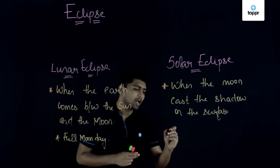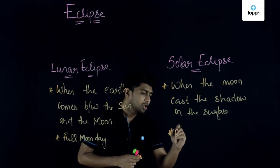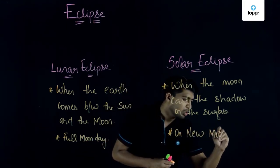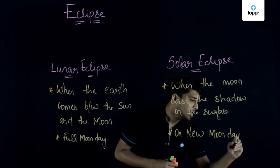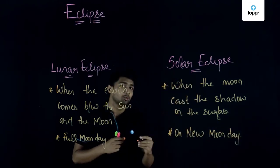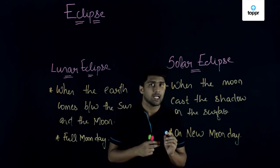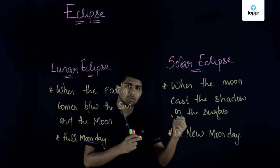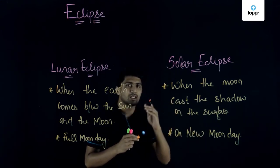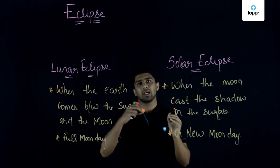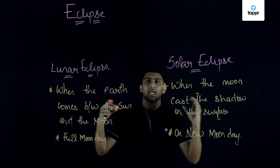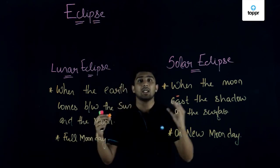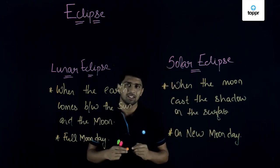Solar eclipse basically happens on a new moon day. This is why we are not able to see the moon on a new moon day — because as per solar eclipse, the sun, the moon, and the earth come in a straight line. The moon comes in between the sun and the earth, and since the size of the sun and the earth is bigger than the moon, that is what a solar eclipse is.